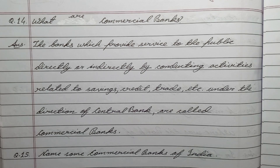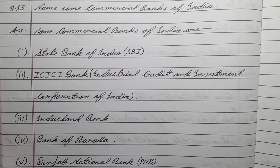Question number fifteen: name some commercial banks of India. Answer: some commercial banks of India are — one, State Bank of India; two, ICICI Bank; three, Industrial Development Bank; four, Bank of Baroda; five, Punjab National Bank.